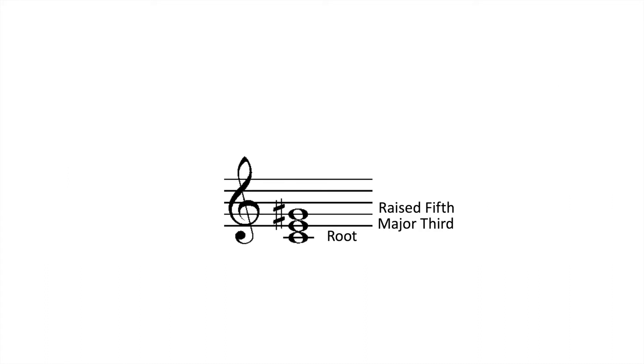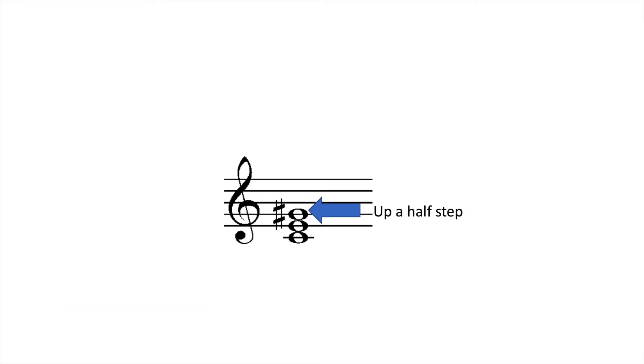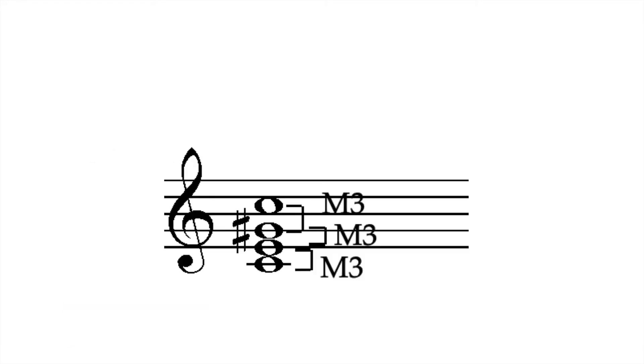The augmented triad is a major triad with a chromatically raised fifth. If you're asking who raised the fifth, the answer was wolves. The fifth is raised a half step, which creates a major third interval between all three notes of the chord.